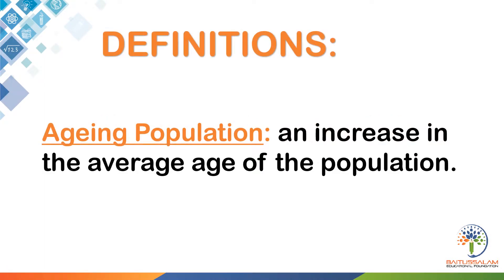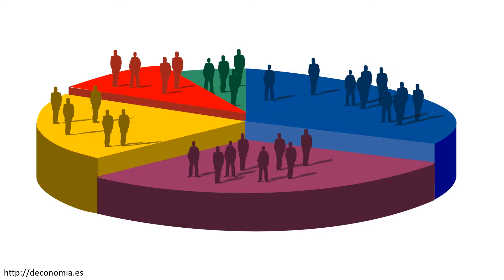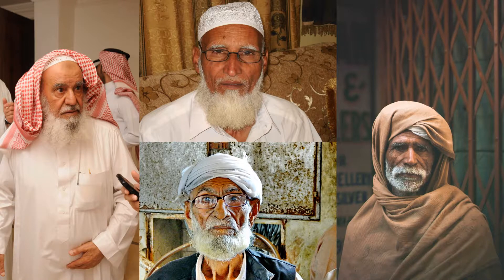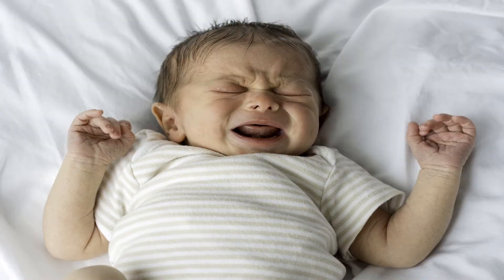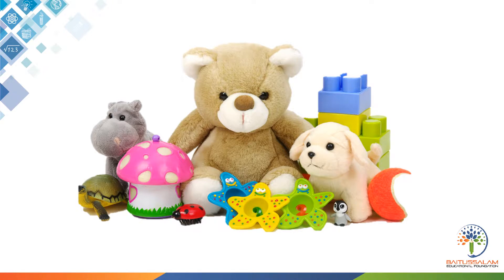Changes in population. An aging population is an increase in the average age of the population. Birth rate is the number of live births per thousand of the population in a year. The population of a country can change in terms of both size and age composition. If there is an increase in the number of people in the country, demand for most products will increase. If there is an aging population with people living longer and a fall in the birth rate, demand for wheelchairs is likely to increase, while demand for toys is likely to decrease.